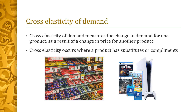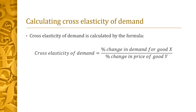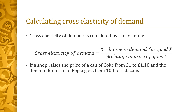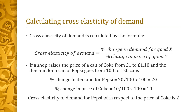Buying one encourages the purchase of another. The formula for cross elasticity of demand is the percentage change in demand for our product divided by the percentage change in the price of the substitute or complementary good. If a shop raises the price of a can of Coke from £1.00 to £1.10 and the demand for a can of Pepsi goes from 100 to 120 cans, then the percentage change in demand for Pepsi is 20% and the percentage change in price of Coke is 10%, so the cross elasticity of demand for Pepsi with respect to the price of Coke is 2.